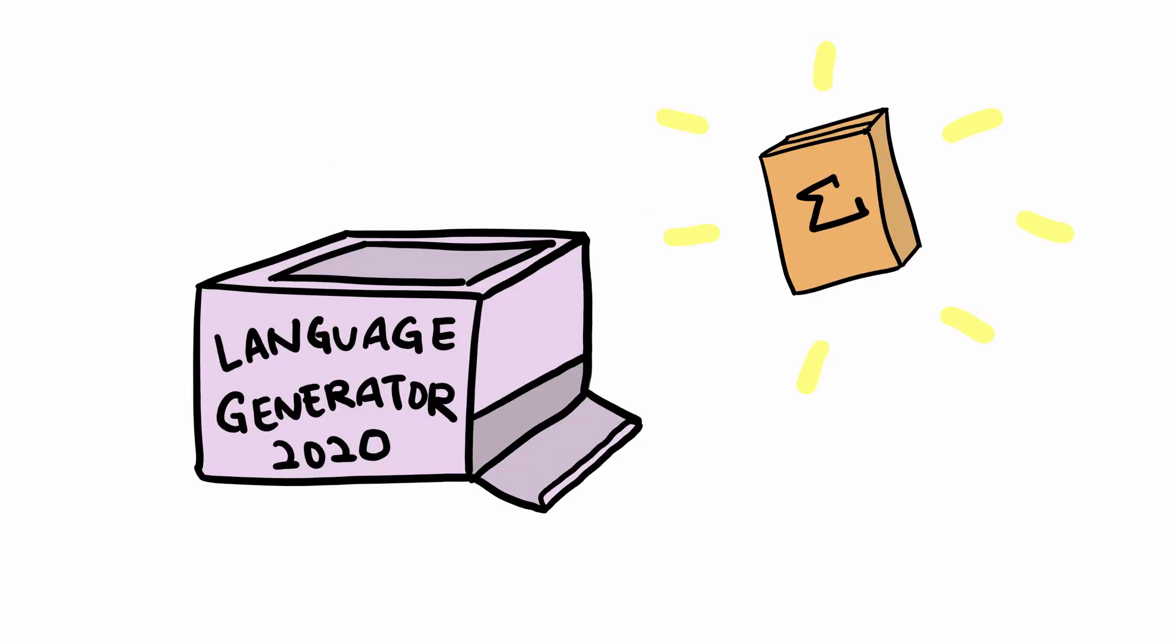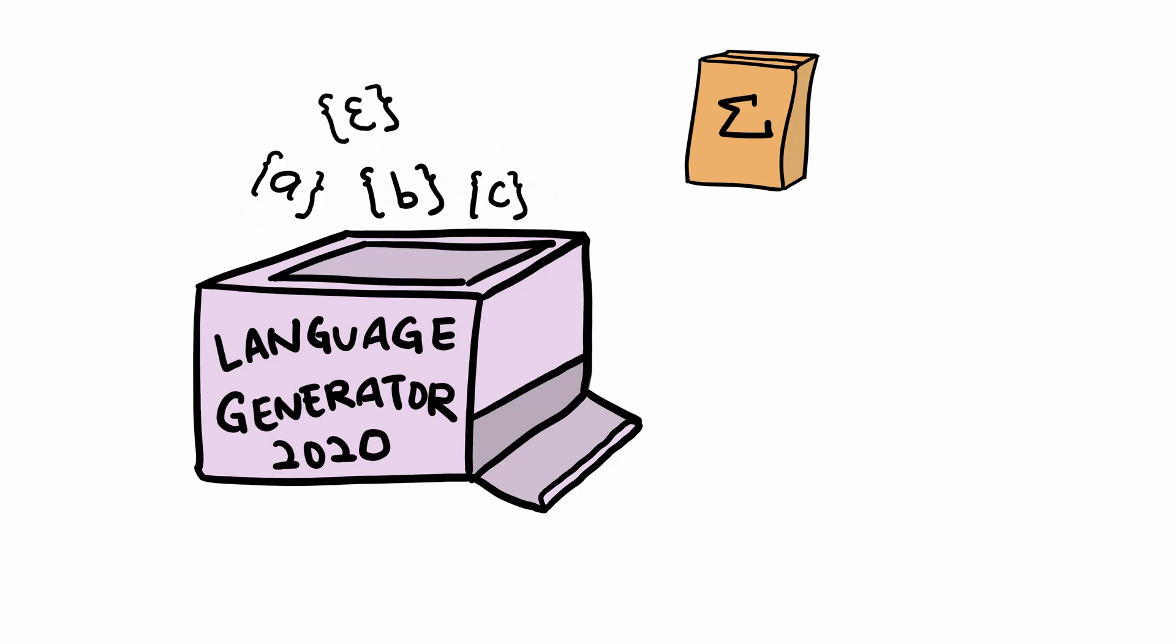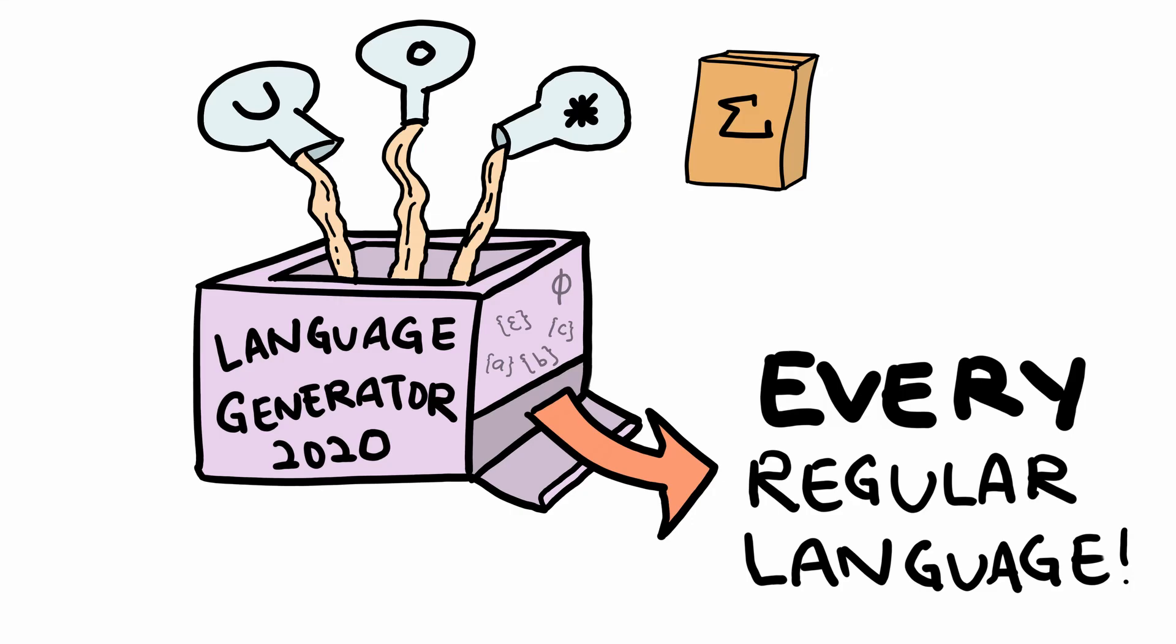Well, given some alphabet, which is just some set of symbols, if we were to start with some very small set of initial languages over said alphabet, specifically each symbol that is in the alphabet, the language containing the empty string, and the language that is the empty set, by applying only those three regular operations over them, we will be able to generate all the regular languages over that alphabet.